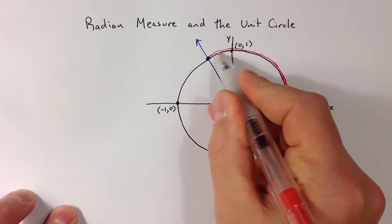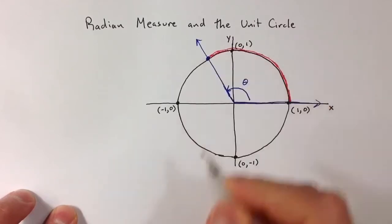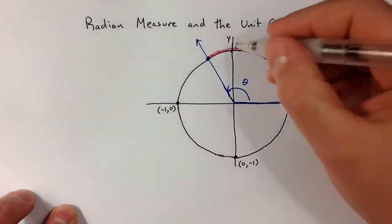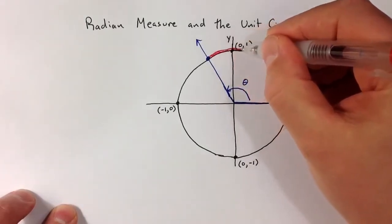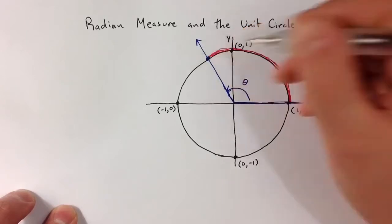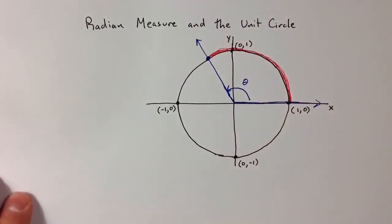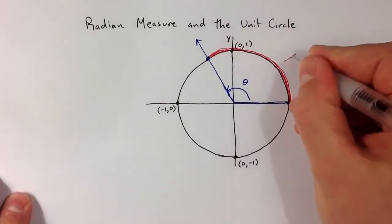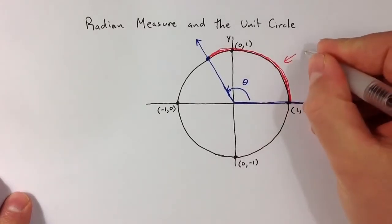The place where the terminal side should lie. So that rotation corresponds to a distance that would need to be traveled along the unit circle. That amount of distance, that's called the radian measure.